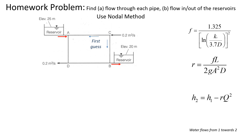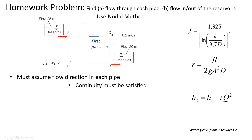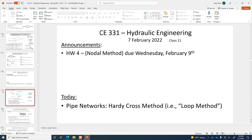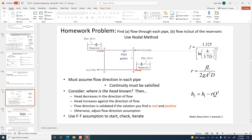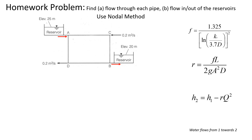You first have to guess the flow direction because you don't even know that. Let's assume water is going from C towards A and from C towards B. Once you make that initial guess, you have to ensure continuity is satisfied. For example, flow couldn't go from A towards C and from B towards C simultaneously, because then you'd have water entering junction C from three directions with no outflow. But water going from A to C and from C to B would be a valid first guess.